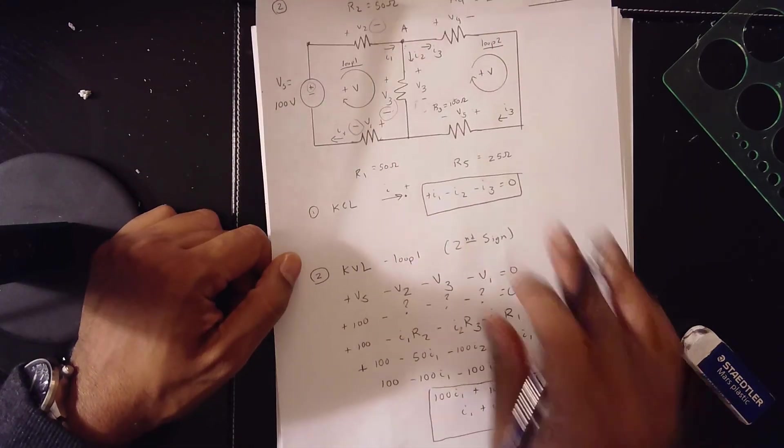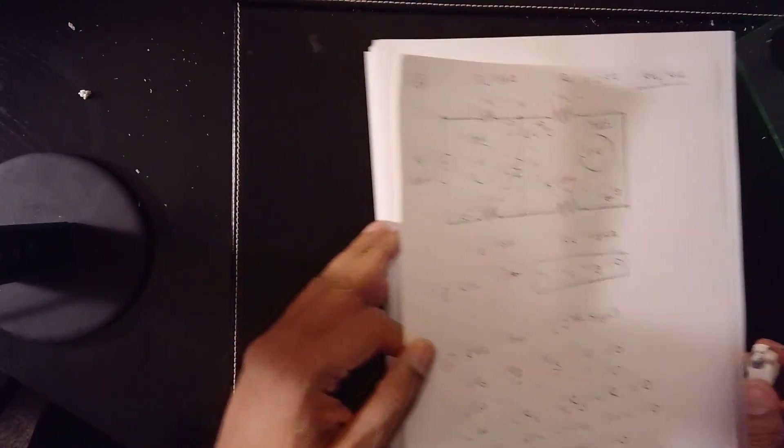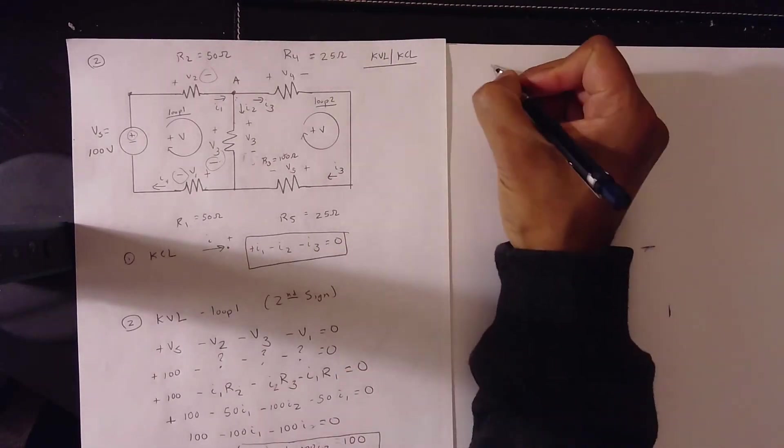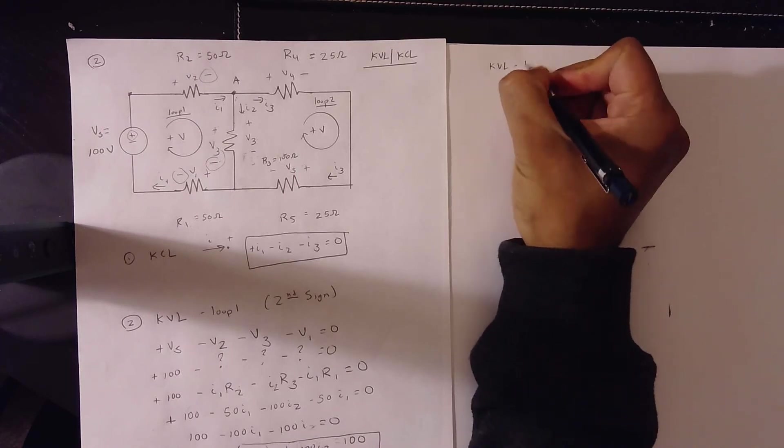Then we do, obviously, our last loop. We have to do it side by side. So let's look at it side by side. KVL. Loop 2.